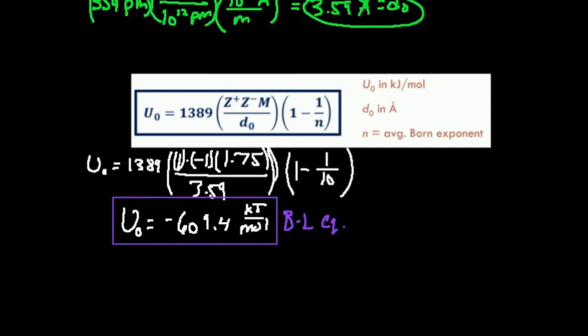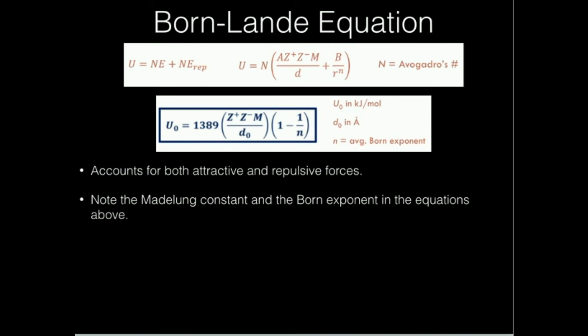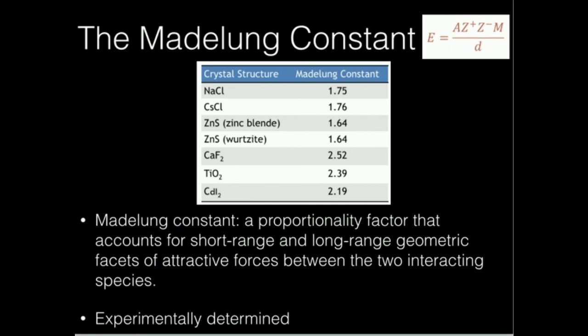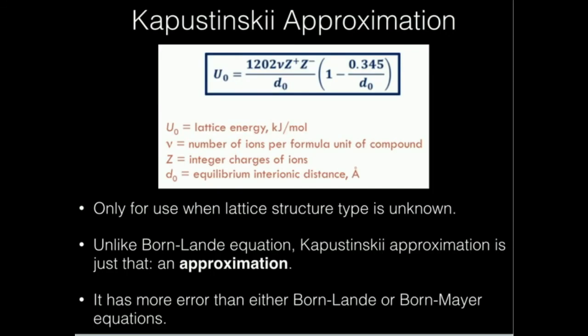In the next video, we're actually going to use the Kapustinskii approximation, which is useful when you don't know the lattice structure, and we'll see if we get anything close to this result. The Born-Landé equation takes into account the Madelung constant and the Born exponent, but because it requires the Madelung constant, you ultimately have to know the crystal structure or lattice type. If you don't know the lattice type, you use the Kapustinskii approximation.